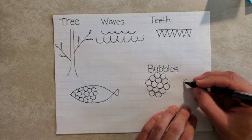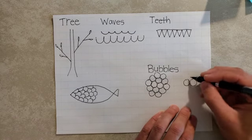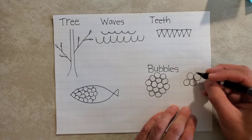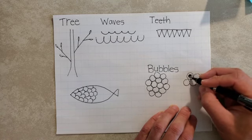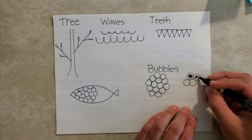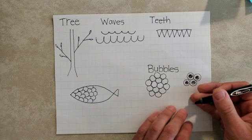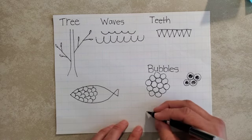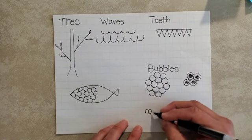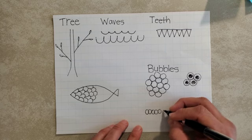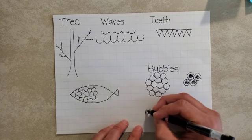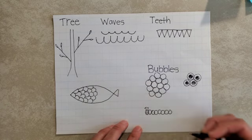But maybe, instead of bubbles, you want to use your ability to draw circles over and over again to show frog eggs. Or maybe you want to use your ability to draw circles over and over and over again to represent a caterpillar.